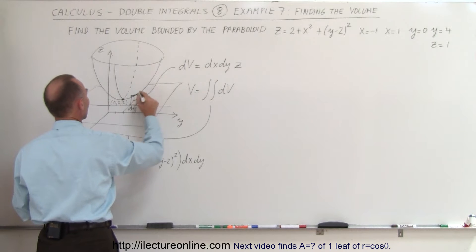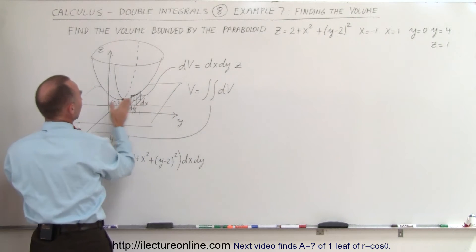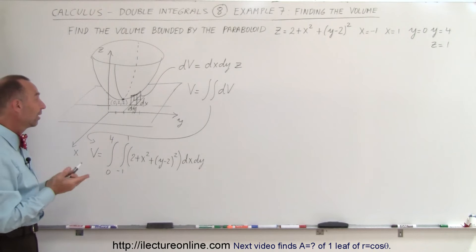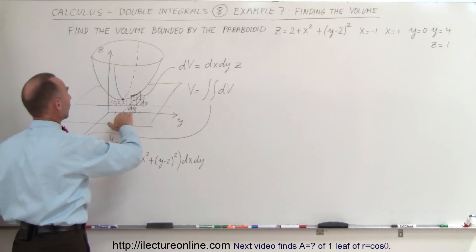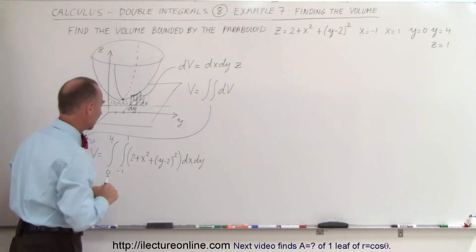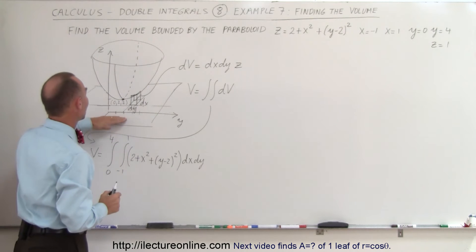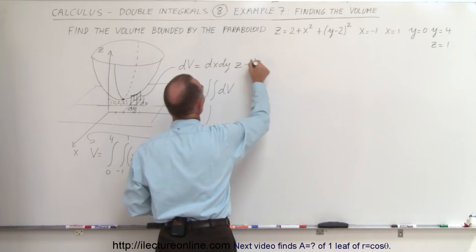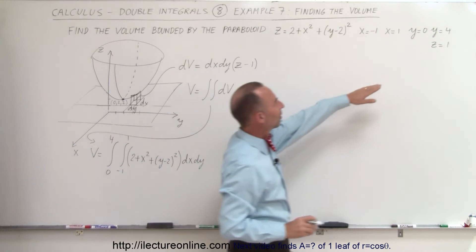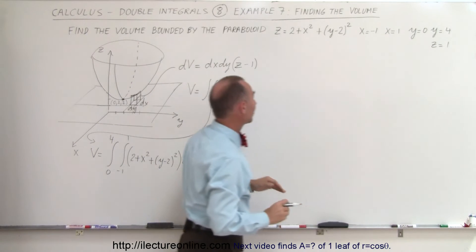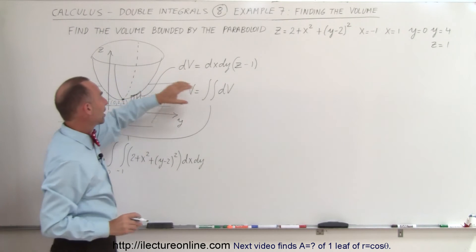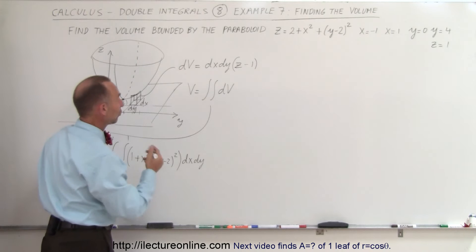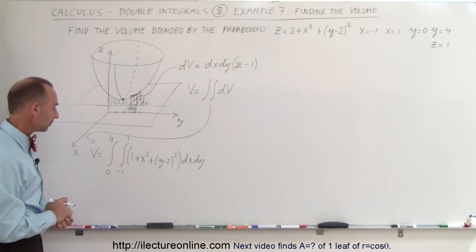We integrate a strip in the x direction and then sweep from 0 to 4 for y. But wait — almost made a mistake. We're not integrating from 0 to the paraboloid; we're integrating from z equals 1 to the paraboloid. So the height of the volume element is z minus 1, not z. That means 2 minus 1 gives 1, so the constant term becomes 1 instead of 2.